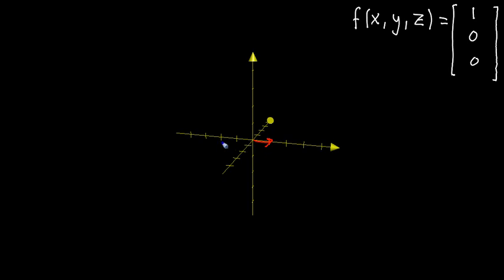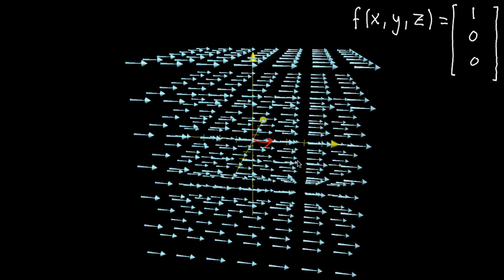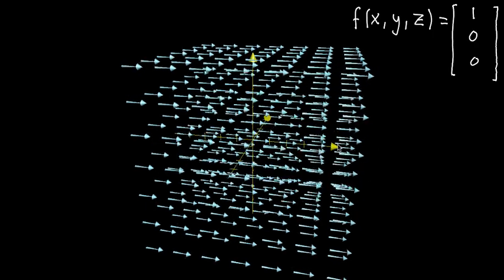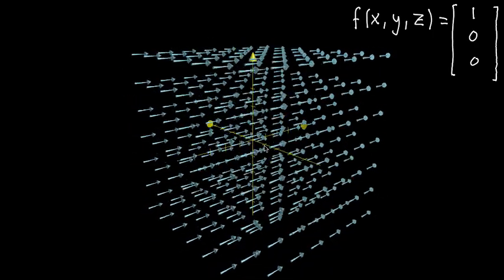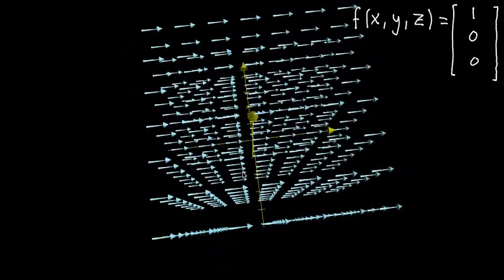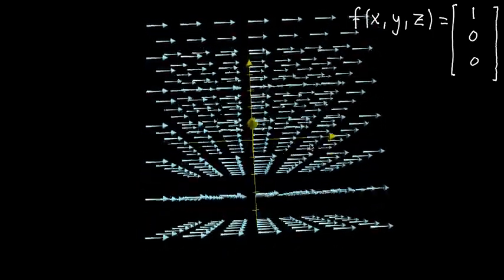And when we do this at every possible point, well, not every possible point, but a sample of a whole bunch of points, we get a vector field that looks like this. At any given point in space, you get one of these little blue vectors, and all of them are the same. They're just copies of each other, each pointing with unit length in the x direction.